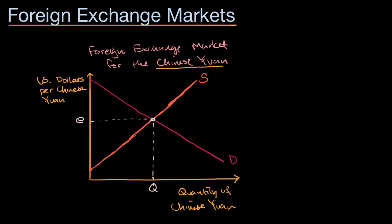For example, let's say that our equilibrium quantity — the quantity that changes hands per day — let's call this Q1, is 1,000 yuan. These numbers are very low; real exchange markets might involve billions or even trillions of various currencies. But let's say for argument it's 1,000 yuan per day as our equilibrium quantity, and let's say this exchange rate E1 is equal to 10 cents per yuan — or one-tenth of a US dollar per Chinese yuan. So that's our current exchange rate.